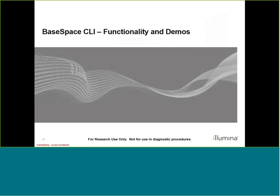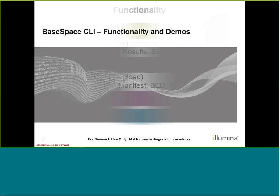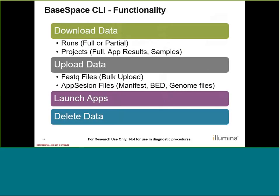Now that we have CLI installed and authenticated for all of the different accounts, let's move into functionality and a few demos. To review CLI functionality: we can download data — this means downloading runs either fully or partially, and downloading projects either fully or partially, including certain app results or specific files associated with a sample. We can also upload FASTQ files in bulk and upload app session files like manifest files, targeted BED files, and even custom genome files. CLI also allows us to launch apps and delete data.